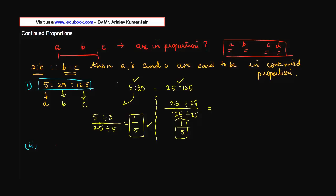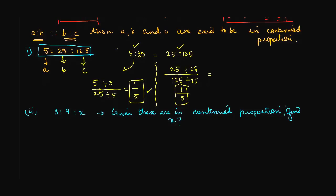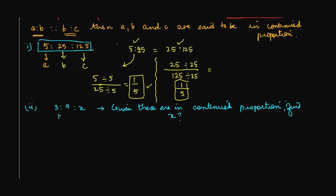Let's say you are given that 3 is to 9 is to X. Given these are in continued proportion, find X. Now again, if these three are in continued proportion, then what does that mean?